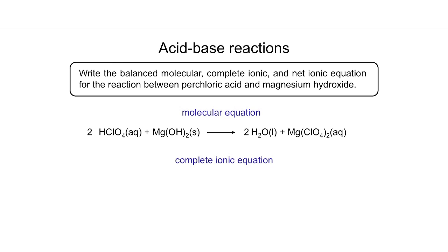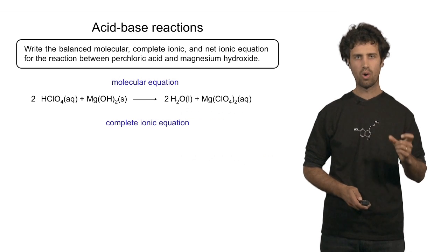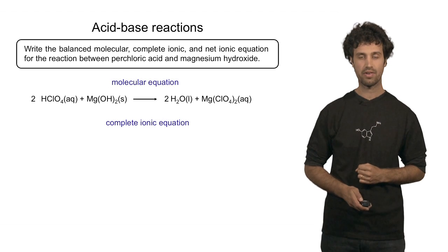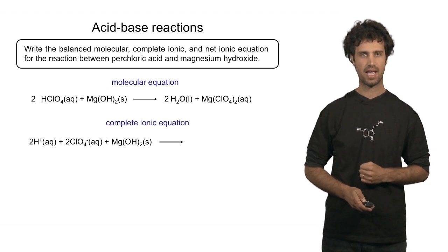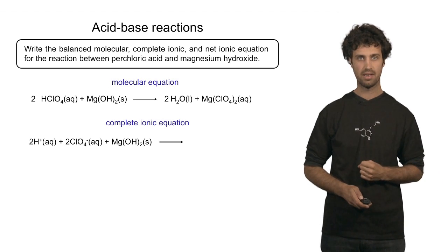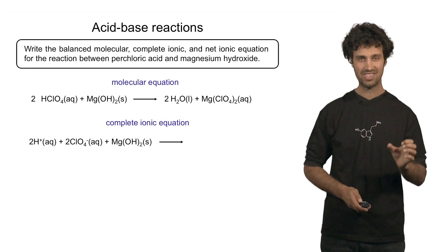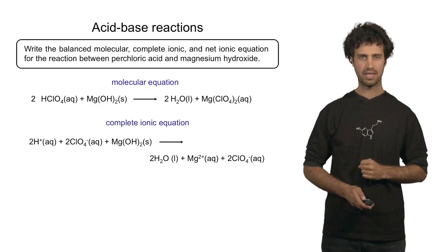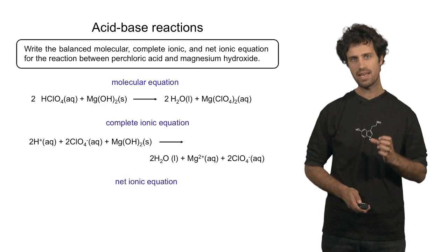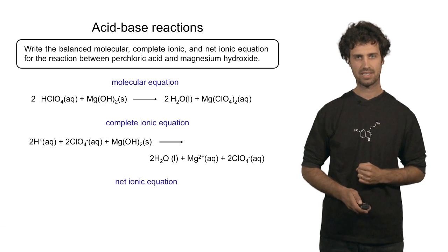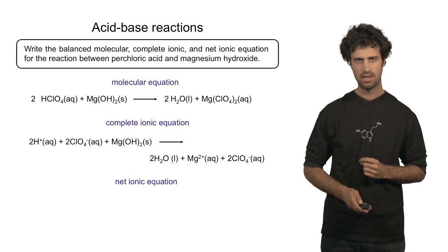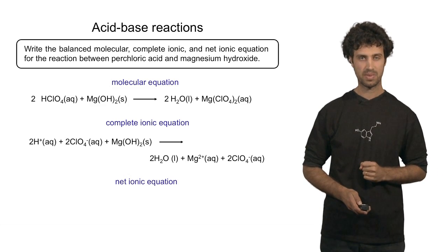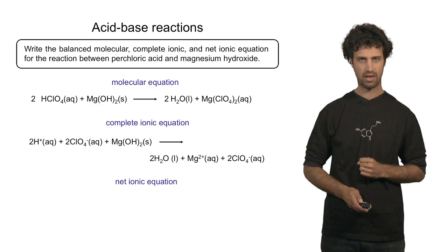Let's move on to the complete ionic equation. In the complete ionic equation, all strong electrolytes are written in their form of dissolved ions. On the reactant side we find protons and perchlorate anions. We also find magnesium hydroxide — magnesium hydroxide does not split into ions; it remains a solid because it is an insoluble salt. On the product side we find water, magnesium ions, and perchlorate anions. To find the net ionic equation, we cross out all the spectator ions. Note, however, that magnesium does not cross out, because on the reactant side magnesium is part of magnesium hydroxide. Only the perchlorate anion can be crossed out.